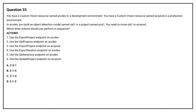Question No. 33. You have a custom vision resource named ACVDev in the development environment. You have a custom vision resource named ACVProd in a production environment. In ACVDev, you build an object detection model named OBJ1 in a project named Proz1. You need to move OBJ1 to ACVProd. Which three actions should you perform in sequence? 1. Use the export project endpoint on ACVDev. 2. Use the export project endpoint on ACVDev. 3. Use the import project endpoint on ACVProd.